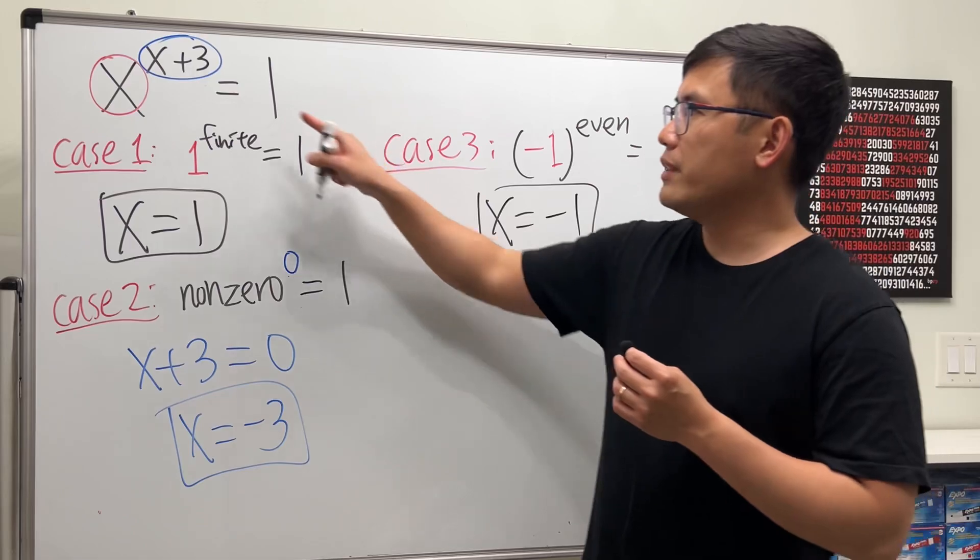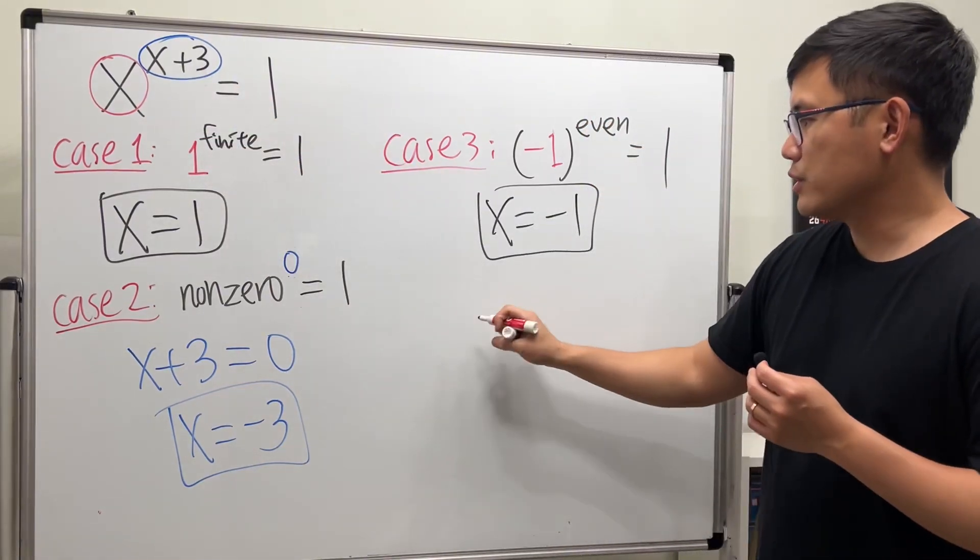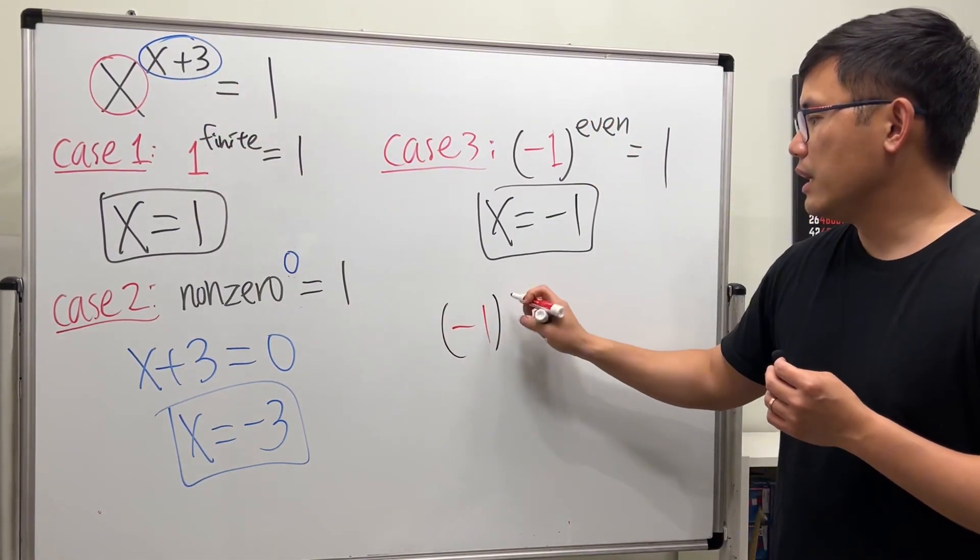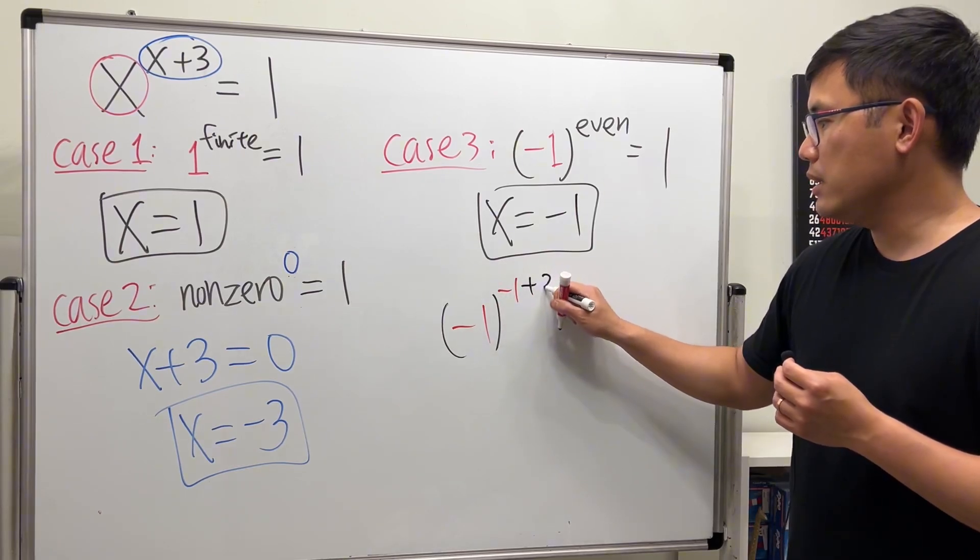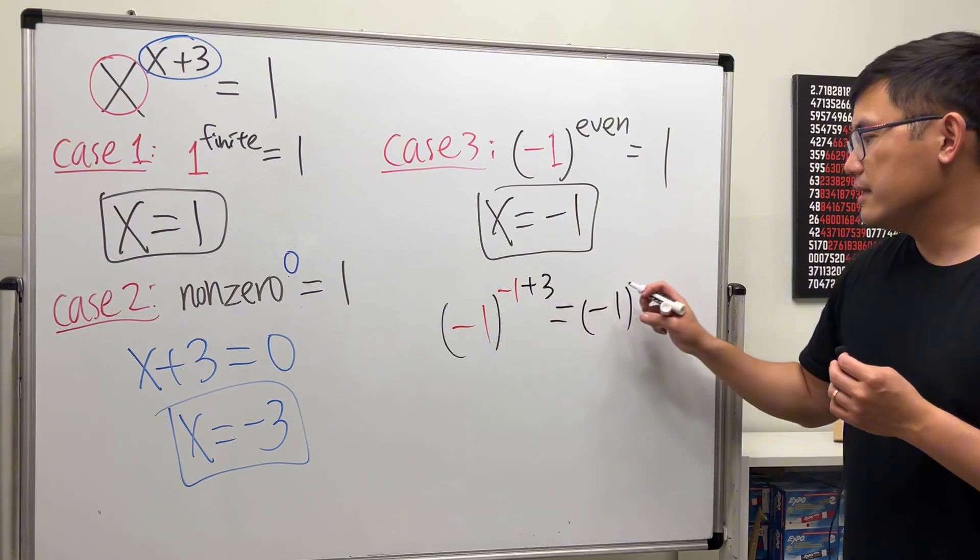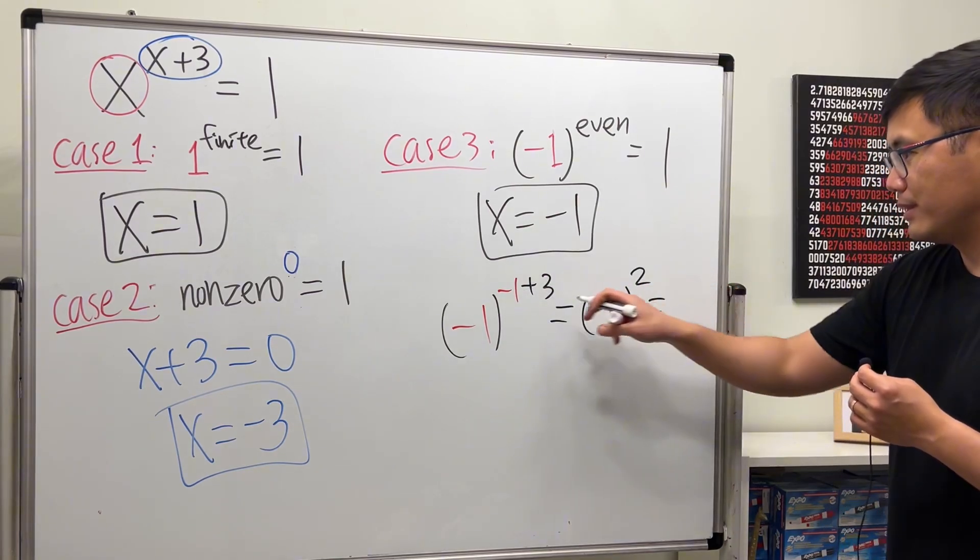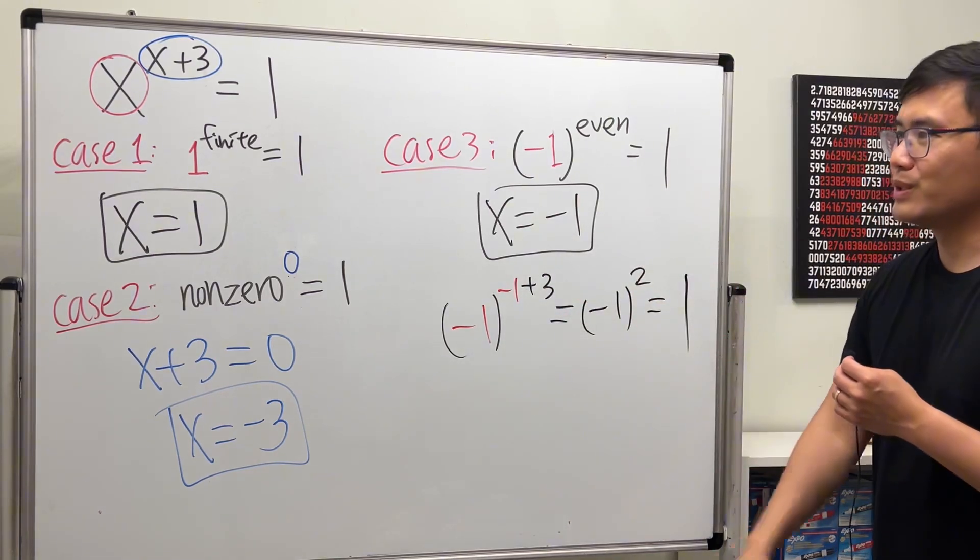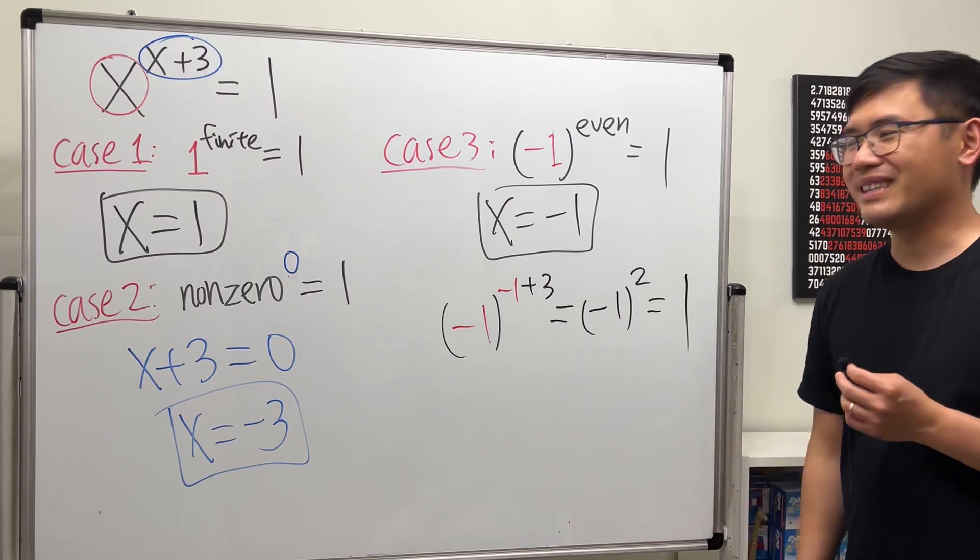Because if we have negative one right here, let me just check for you. Negative one raised to the negative one plus three—it happens to be negative one for the base, and this right here is two, which is an even number, and we end up with one. Just like that, pretty neat, huh?